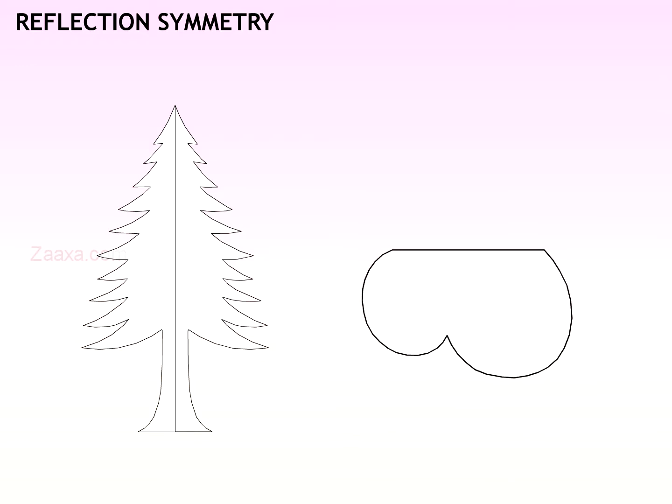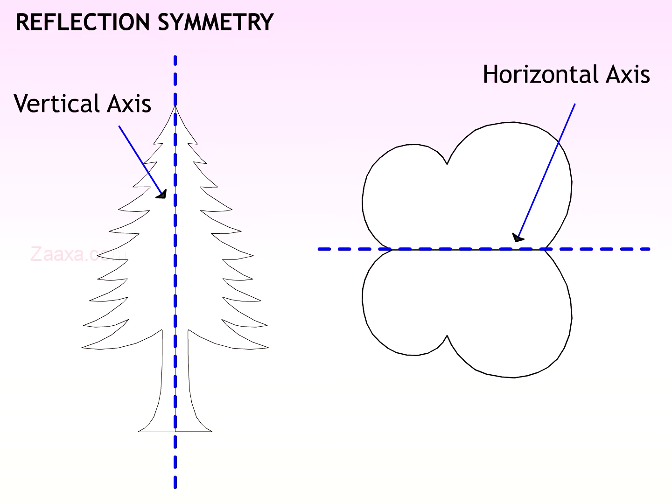The line that separates the two halves is called the line of symmetry or the axis of symmetry. A figure may have both horizontal and vertical lines of reflection. If the line is vertical, it is called the vertical axis of symmetry, and if the line is horizontal, it is called the horizontal axis of symmetry.